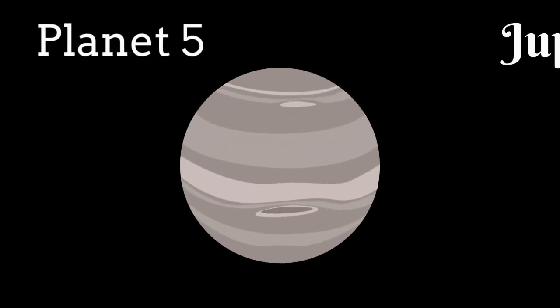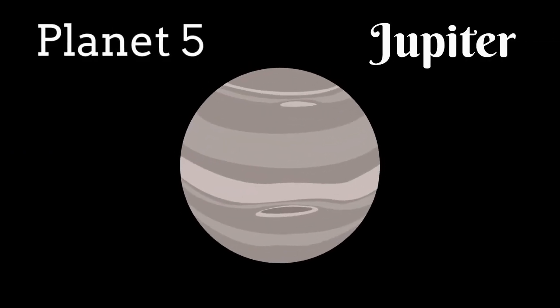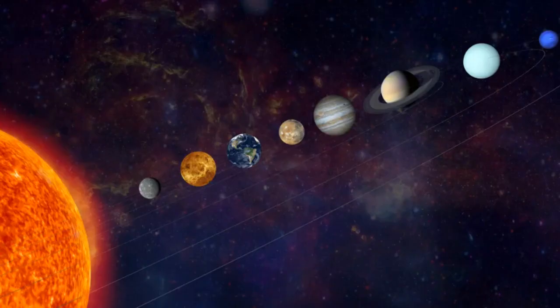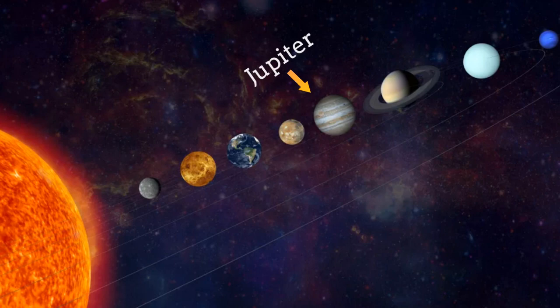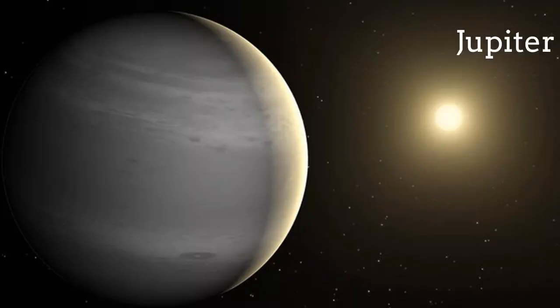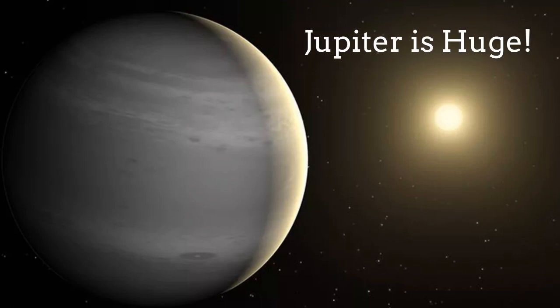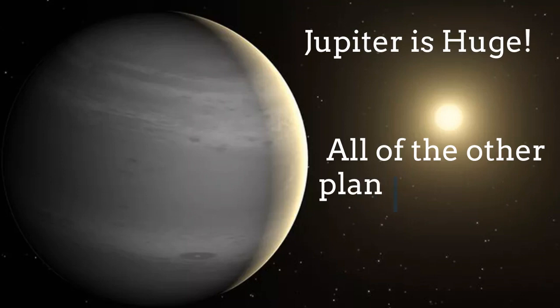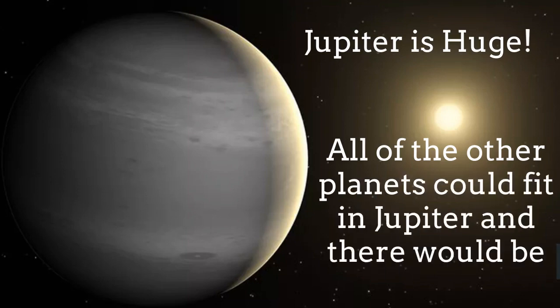Next planet, planet 5 is Jupiter. Jupiter is 1st of the gas planet. Jupiter is the massive planet which is between Mars and Saturn. I mean by massive, Jupiter is huge. It is the biggest planet in our solar system. In fact, all of the other planets could fit in Jupiter and there would be extra room. So Jupiter is so huge.